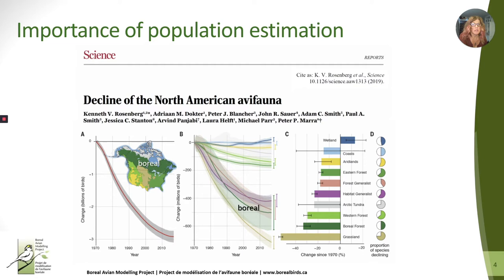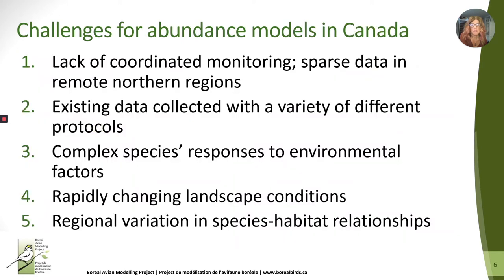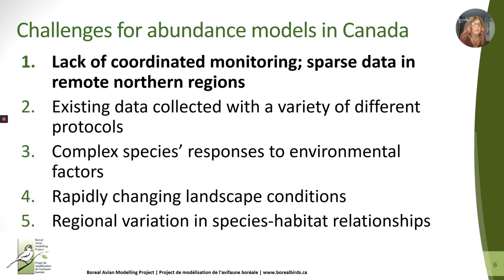We also have a lot more uncertainty in the north, as you can see by the error bars. These error bars are focused on the trend, but we also have a lot of uncertainty about the underlying population numbers. The Science paper used the best available population estimates from Partners in Flight, but for land birds, the numbers were based on BBS data, which are very sparse in the north due to the limited road network. Due to this lack of coordinated monitoring, data gaps are first on our list of data challenges — I've highlighted five central challenges here.